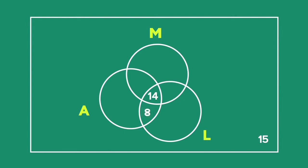We are told that 26 learners take Maths and Accounting, and we already have 14 marked in. So mark in 12, since 14 plus 12 equals the required 26 learners, on the intersection between Maths and Accounting. We are not told how many learners take Maths and Life Sciences only, although we know that 14 learners take Maths, Life Sciences, and Accounting. So let the number of learners who take Maths and Life Sciences only be X.